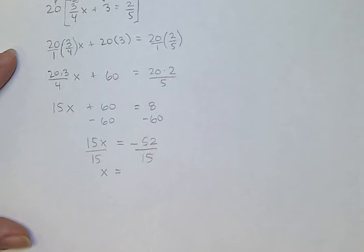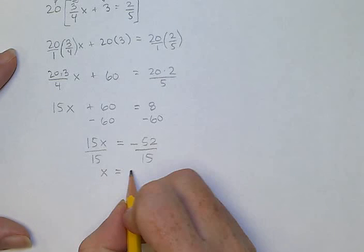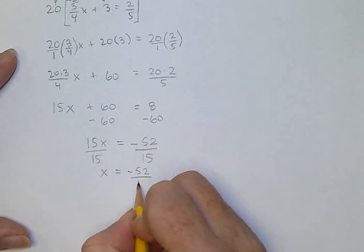I'm trying to think if that can simplify any more. 52 can be divided by 2 but 15 can't. Can 52 be divided by 3? No. I think that might be as simplified as I can get it. So I'm just going to leave it as negative 52 over 15.